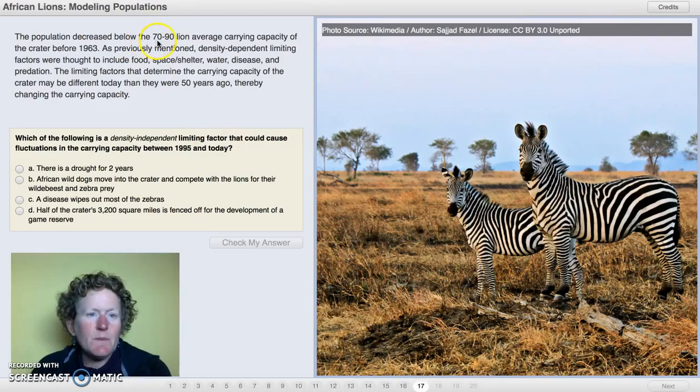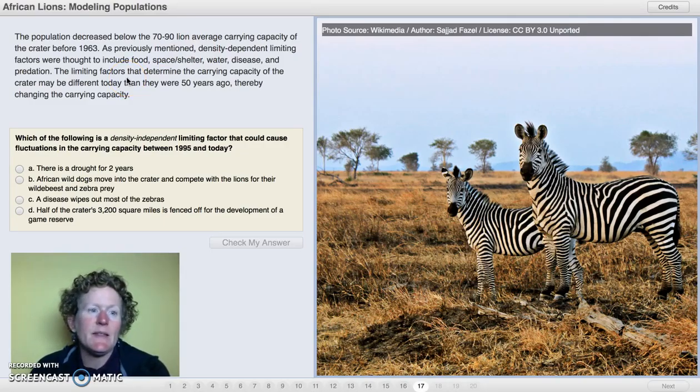The population decreased below the 70 to 90 lion average carrying capacity of the crater before 1963. As previously mentioned, density-dependent limiting factors were thought to include food, space, shelter, water, disease, and predation. The limiting factors that determine the carrying capacity of the crater may be different than they were 50 years ago, thereby changing the carrying capacity. Which of the following is a density-independent limiting factor that could cause fluctuations in the carrying capacity between 1995 and today? Well, I mentioned it earlier. Whether it rains or not doesn't matter how many animals are in a population doesn't affect whether it rains or not. That is a big hint in choosing the correct answer there.